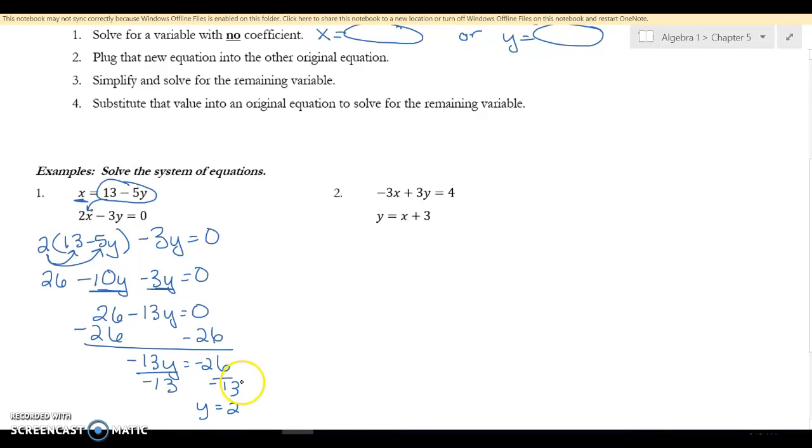So negative 13Y is negative 26, and I'm going to divide by negative 13, so I get Y is 2. Now this is the second place that I have a circle for - it tells me where to plug it in. So it's going to be 13 minus 5 times Y, which we found out was 2. So 13 minus 10, which is 3. So my X value is 3 and my Y value is 2.